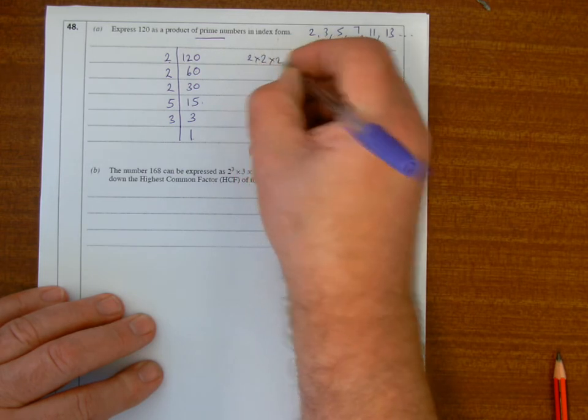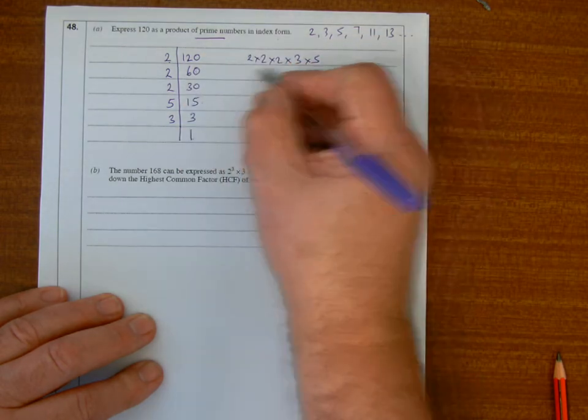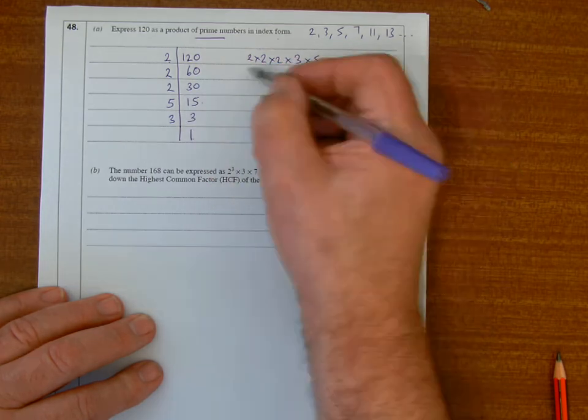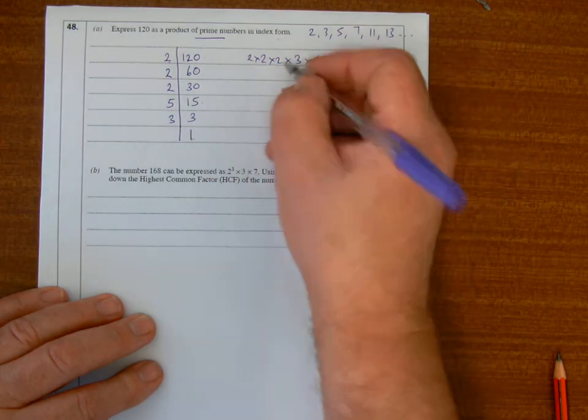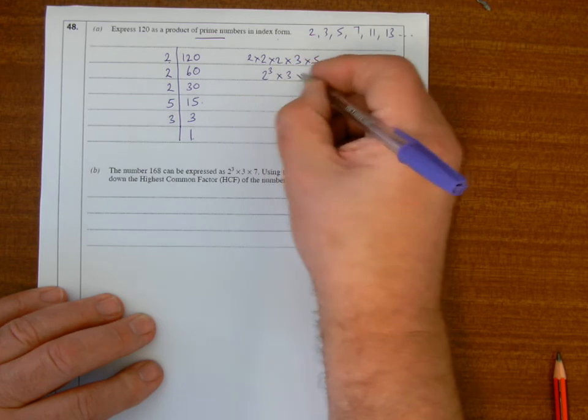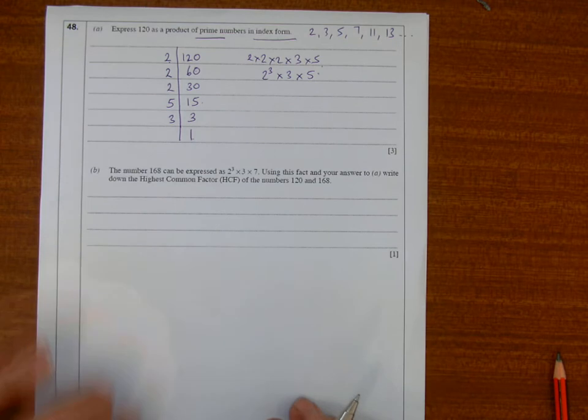So 120 can be written as 2 times 2 times 2 times 3 times 5. When I list, I'll put them in order of size. I got 3 twos, so that's 2 to the power of 3 times 3 times 5. That's the index form part of the answer.